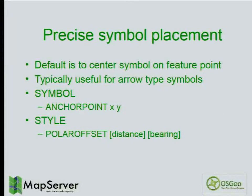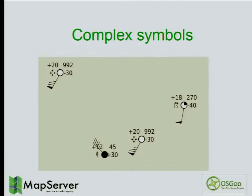More precise symbol placement was added. Previously, symbols were always anchored to the gravity center. Now we've added anchor point and polar offset keywords — you can find them in the docs — which allow you to fully control the positioning of your symbols. One of the big features was support for complex symbology, allowing things like meteorology symbols. It allows you to have multiple labels and symbol components all treated as a single entity in the label cache and in collision detection — that was not possible before.